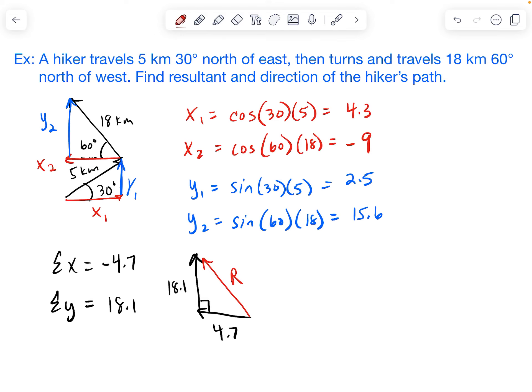Okay? So we can use Pythagorean theorem to find the resultant here. Even if you want to leave that negative, negative 4.7 squared plus 18.1 squared, that's okay. A negative times a negative is going to come out to be positive anyways.